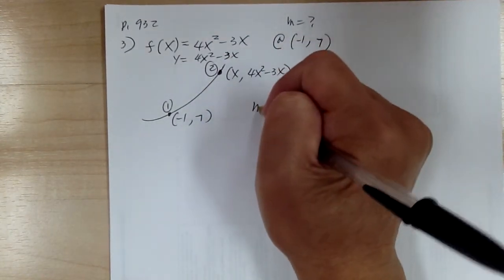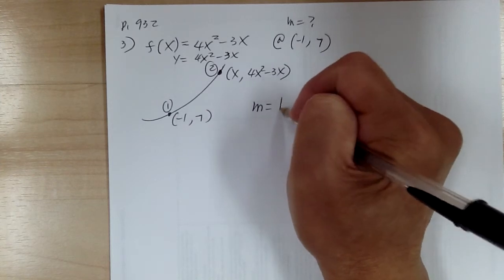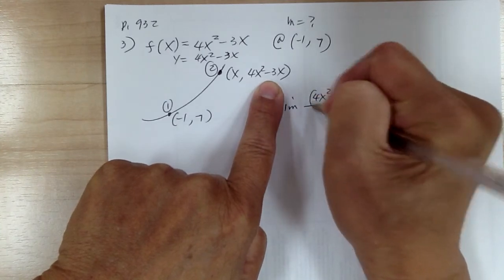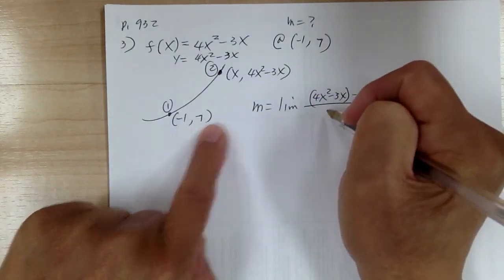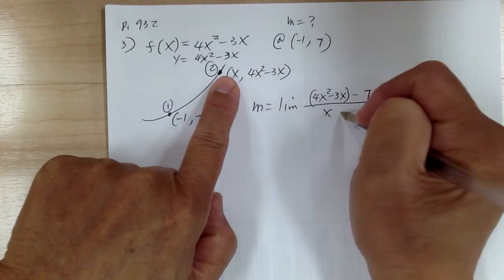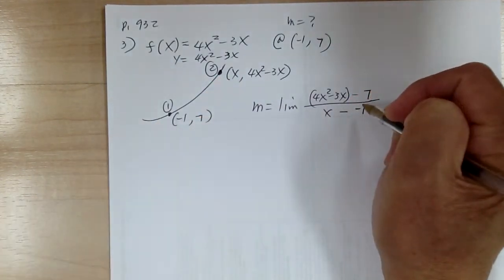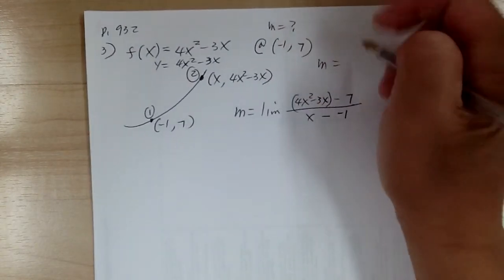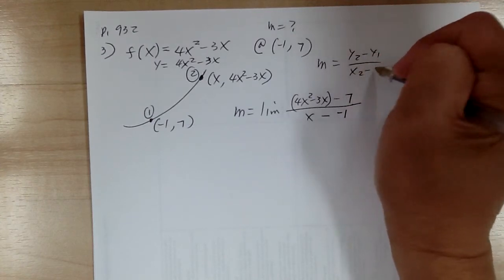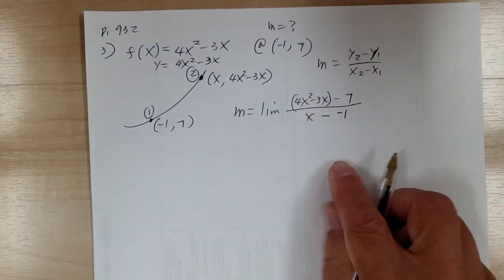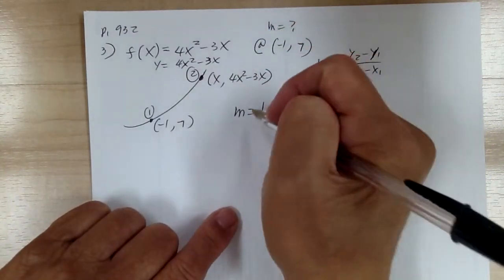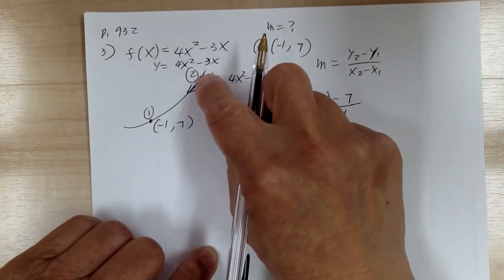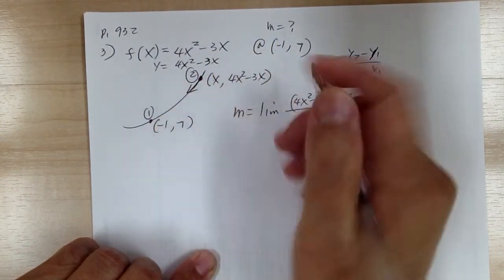So now your slope equals the limit. It'd be y2 minus y1 over x2 minus x1. That's the slope formula. The limit would be — over here you're going to bring this point close to that. So it'd be x approaches to negative 1.